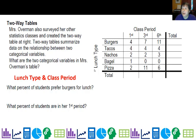The two categorical variables are lunch type — and the categories for that are burgers, tacos, etc. — and class period, with categories first, third, and sixth.